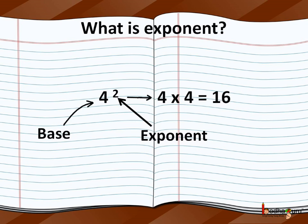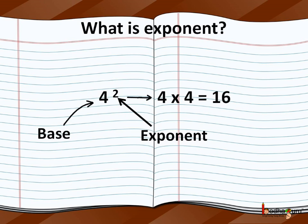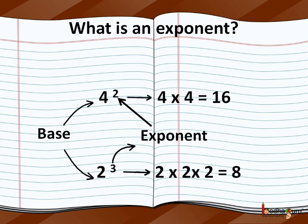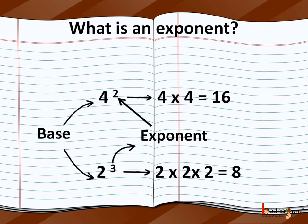For example, 4 to the power 2 means 4 multiplied by 4, that is 16. In 4 to the power 2, 4 is the base and 2 is the exponent. Same way, 2 to the power 3 means 2 multiplied by 2 multiplied by 2, which is equal to 8. And here 2 is the base and 3 is the exponent or the power.